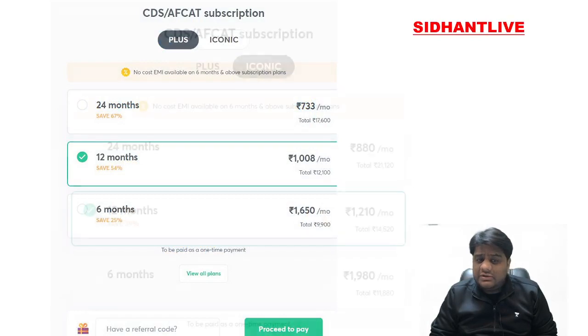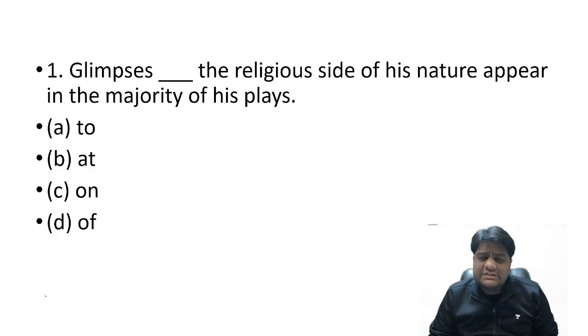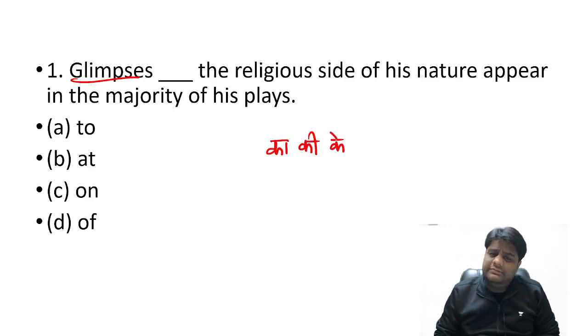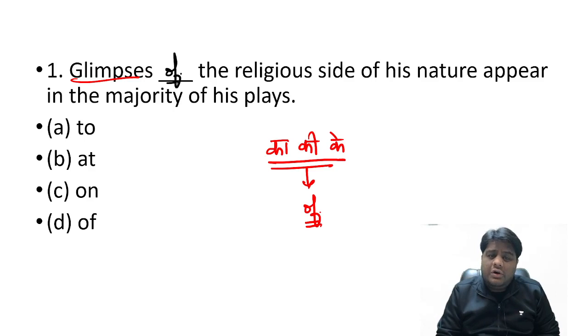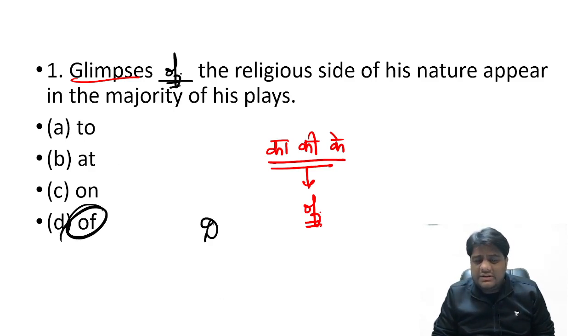So let's start. Here we go guys, everyone whosoever is in the class, we are ready to rock. The first question: glimpses dash the religious side of its nature appear in the majority of its place. Glimpses of the religious side. The right answer is clearly Part D.